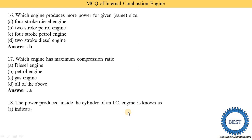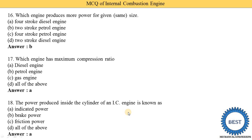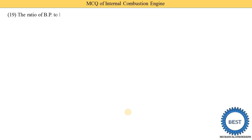Next MCQ: the power produced inside the cylinder of an IC engine is known as — option A: indicated power, option B: brake power, option C: friction power, option D: all of the above. The power produced inside the engine is called indicated power, so option A is correct. The ratio of brake power to indicated power is called mechanical efficiency.